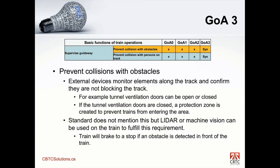The first function is to prevent collision with obstacles. These are external devices that monitor elements along the track and confirm they're not blocking it. I've used the tunnel ventilation doors as an example — there are doors that can open or close in case of a fire to create pressure and vent out smoke and exhaust gases. In a GOA 3 system, they're wired up to the system, and the system determines if it's safe to move through that area. If the doors are closed, a protection zone is created on either side and the trains will stop before reaching those doors so they don't break them down.